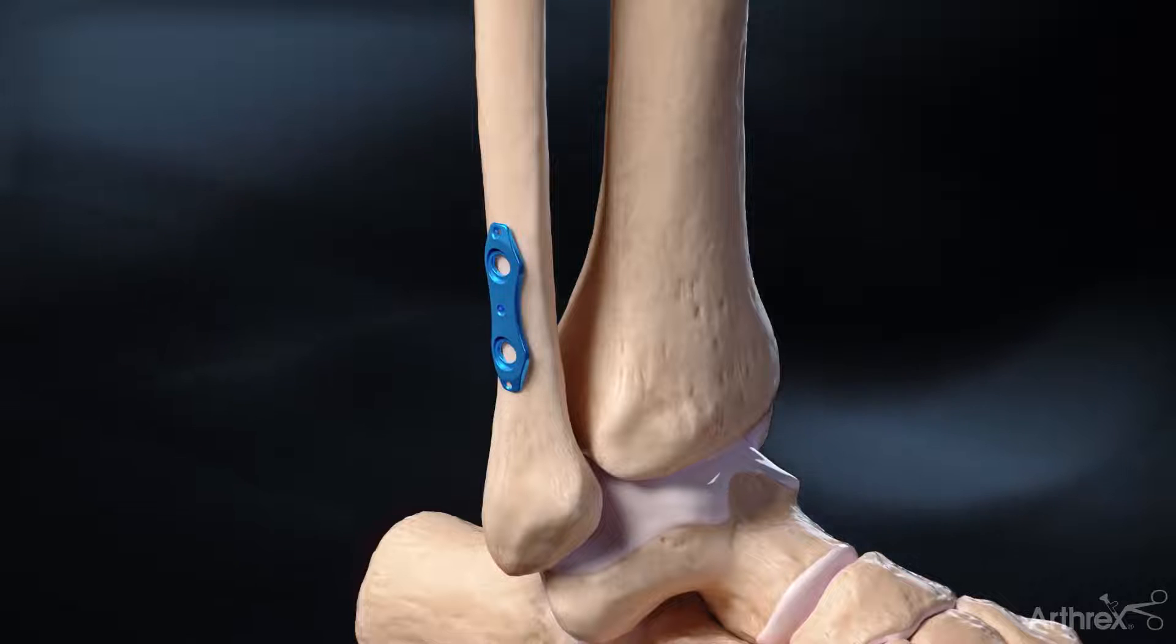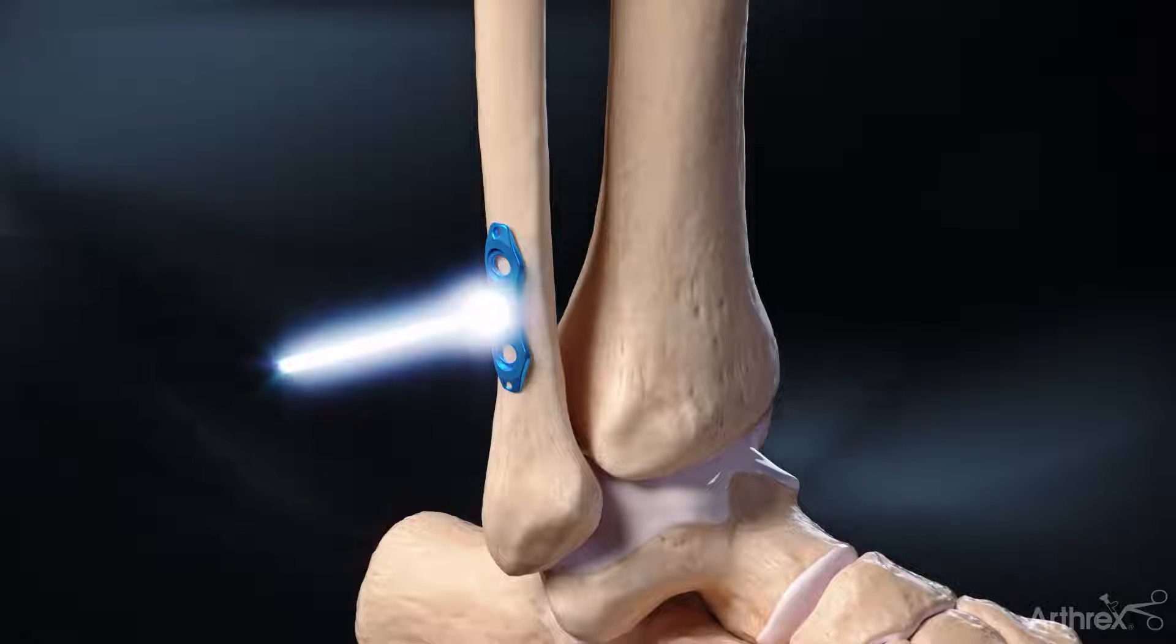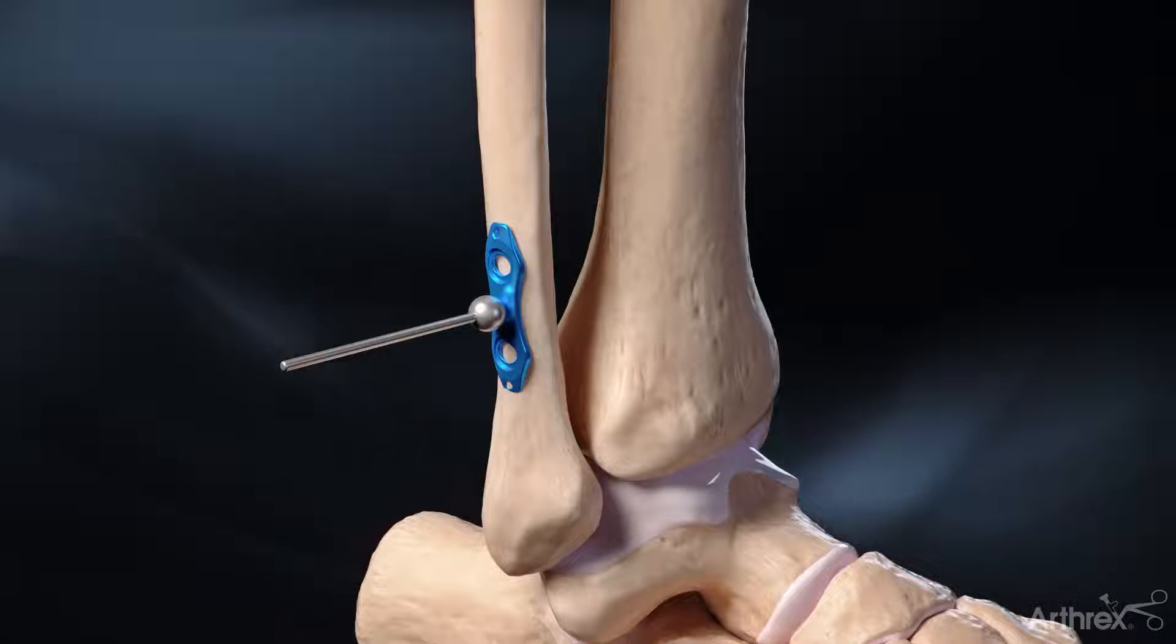A low profile two hole syndesmosis plate is inserted along the lateral fibula. BB tanks can be inserted to hold the plate on bone.